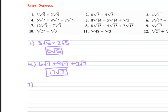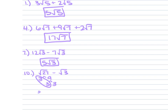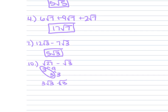Problem 7: 12 square root of 3 minus 7 square root of 3. 12 minus 7 is 5 radical 3. Problem 10: square root of 27 minus square root of 3. The 27 is 3 times 9, and 9 is 3 times 3, so this is 3 square root of 3 minus square root of 3. That's like 3 minus 1, which is 2 square root of 3.